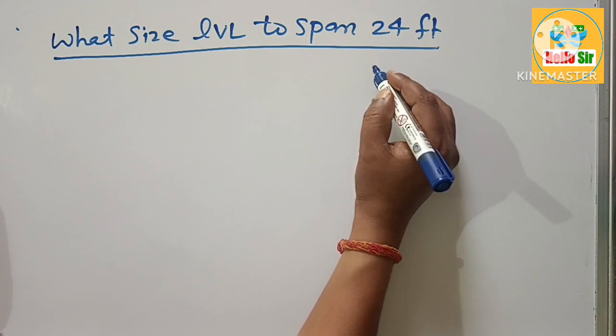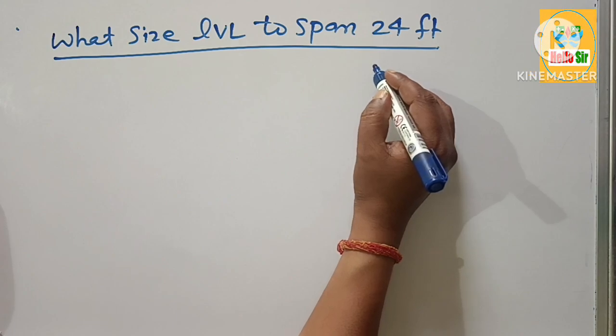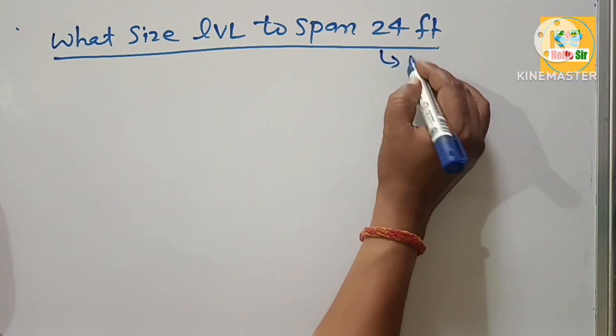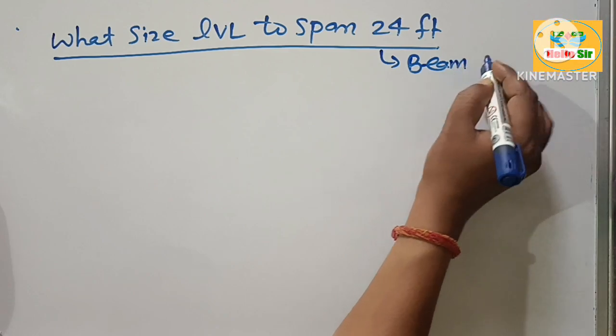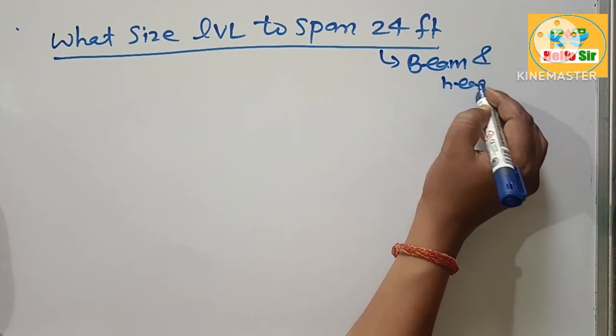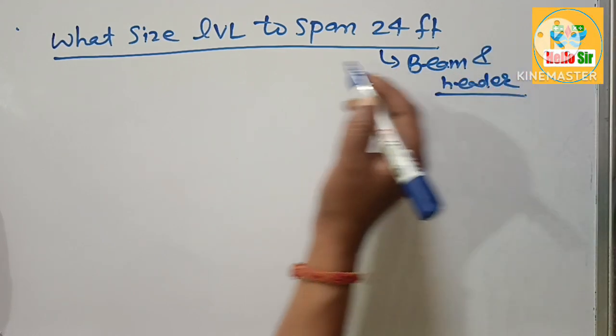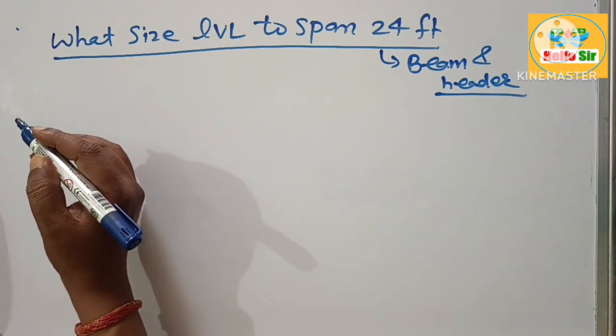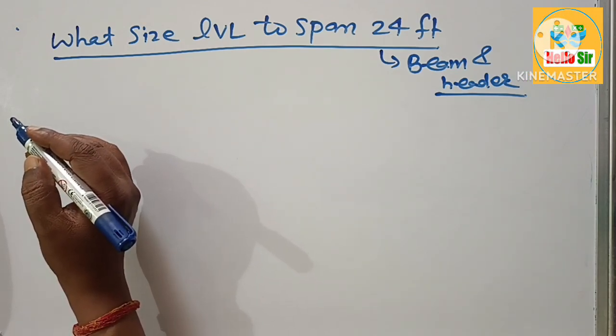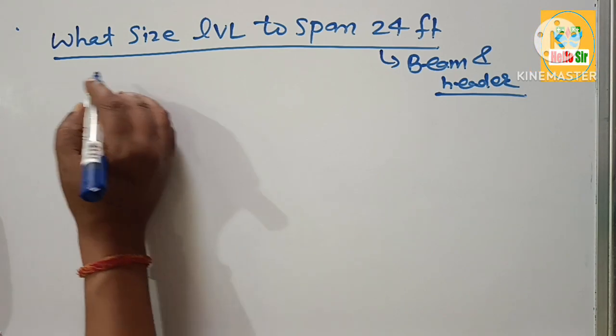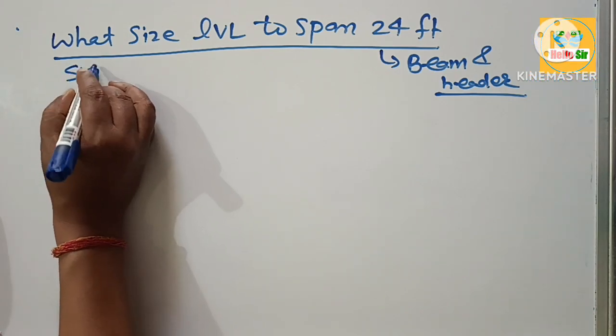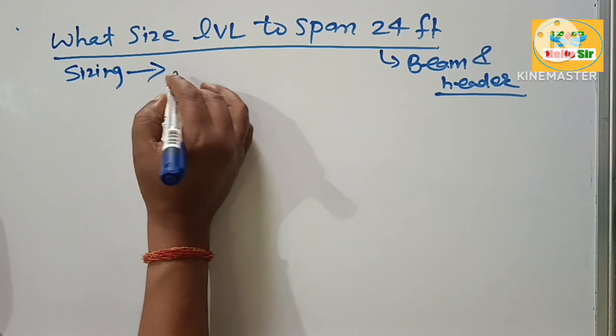On construction sites it is used as beam and header. In this video you have to find out the correct LVL beam size needed to span 24 feet. First we consider sizing. Sizing means you have to find out depth and width of the LVL beam.